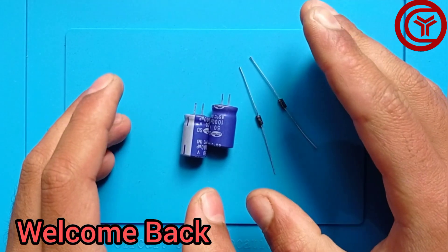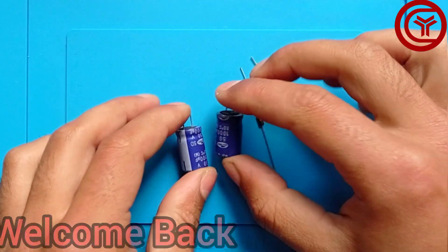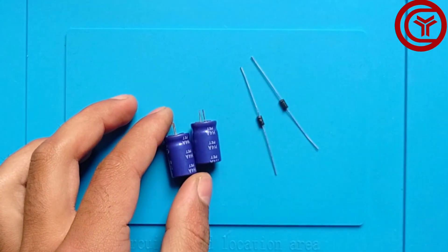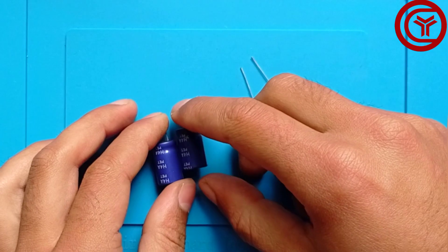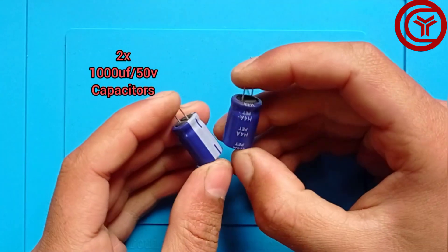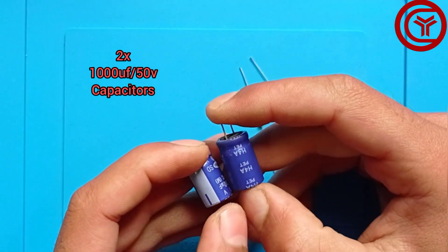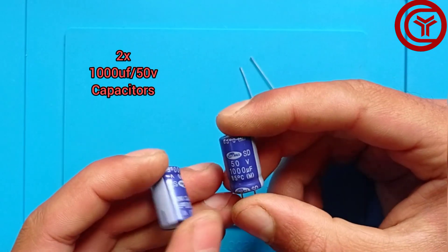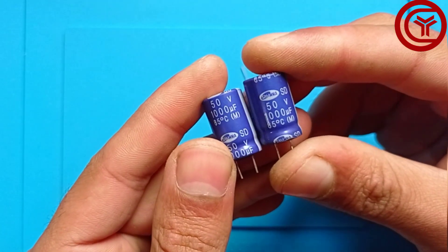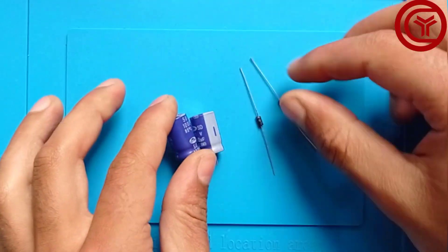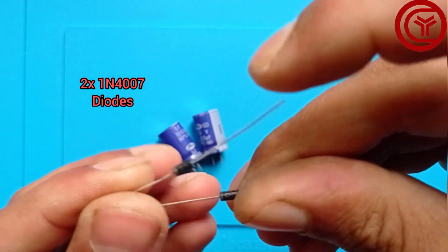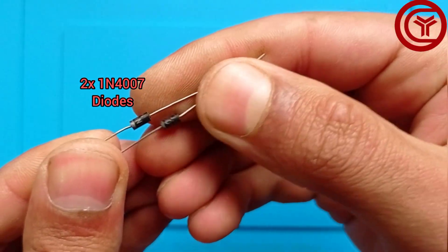Welcome back to my YouTube channel. Today we're going to make a very interesting project - a DC voltage doubler. We're using just four components here: two capacitors of 1000 microfarad, 50 volt, and 1N4007 diodes, which are rectifier diodes.